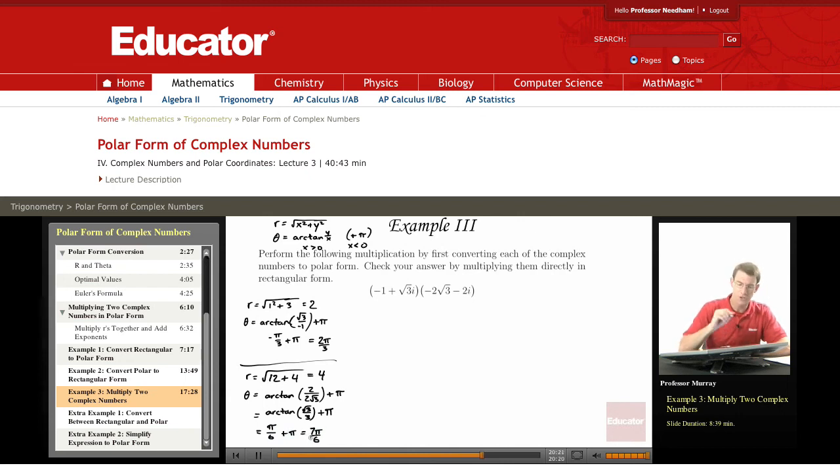So if I convert each one of these numbers into polar form, this one is 2e to the 2pi over 3i, and this one is 4e to the 7pi over 6i.